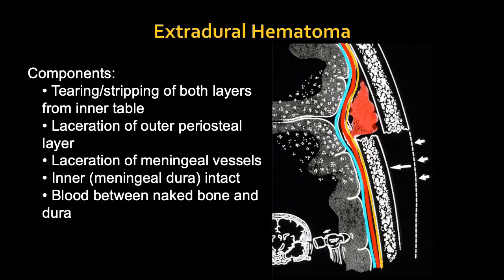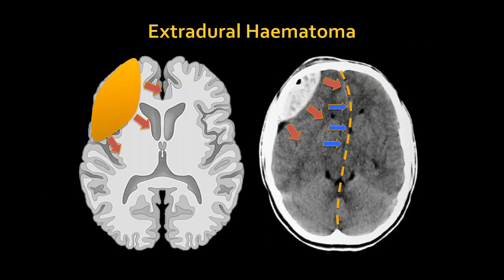What happens is you get tearing and stripping of both layers of the inner table of the skull. You get laceration of the periosteal layer and sometimes sectioning of the meningeal dura, and then blood begins to fill between these two areas. On imaging there will be an intracranial shift, a concave appearance, and blood density almost the same as bone — determining this as an acute epidural hematoma. This type of patient would need urgent surgical intervention.